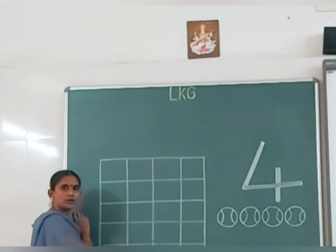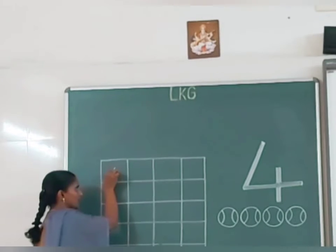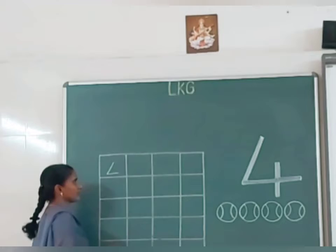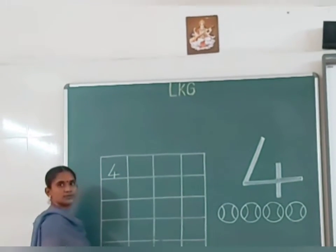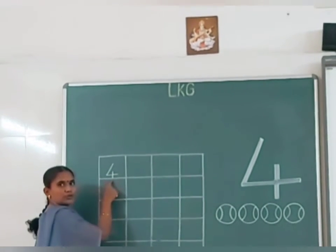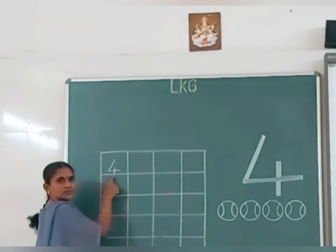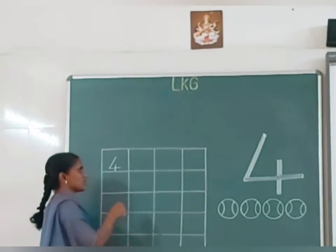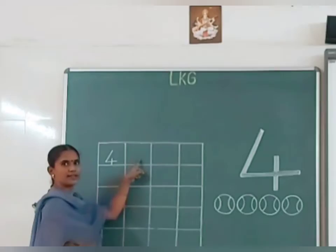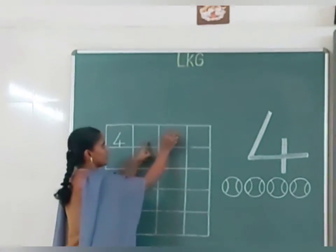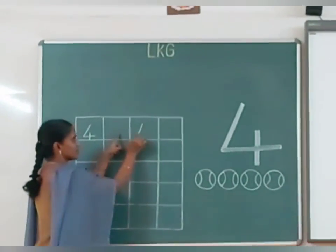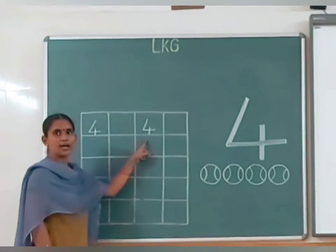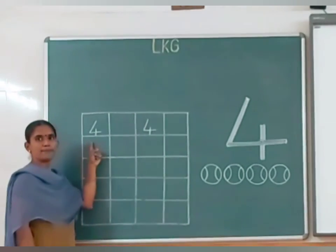How do you write number 4? First you have to draw one slanting line, sleeping line, then a standing line in the center — this center standing line has to touch the line. Say back with me: slanting line, sleeping line, standing line. This is number 4.